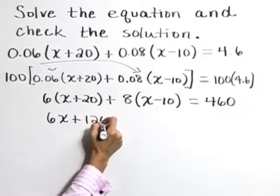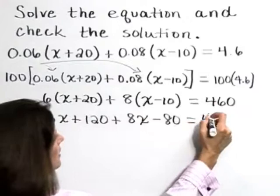Back to the left, distributing, we have 6x plus 120 plus 8x minus 80 is equal to 460.